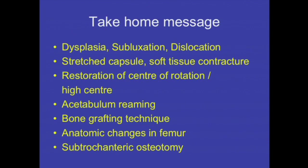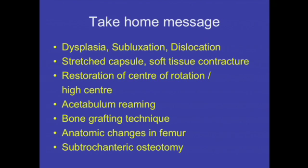Take-home messages: understand the difference between dysplasia, subluxation, and dislocation, and the Crow classification. Soft tissues include stressed capsule and contractures — perform adductor tenotomy before surgery and adequate soft tissue release to restore the center of rotation. Ream the acetabulum first vertically then change inclination and anteversion, being careful about thinning the anterior wall and superolateral deficiency. Learn bone grafting technique — divide the head, place in the superolateral portion, and direct screws toward the sacroiliac joint along the acetabular trabeculae. Understand anatomical femoral changes and prepare the femur accordingly. Learn the subtrochanteric osteotomy technique, which is extremely helpful in Crow type 4.